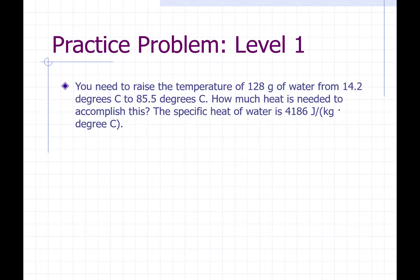Problem one: you need to raise the temperature of 128 grams of water from 14.2 degrees to 85.5 degrees C. How much heat is needed to accomplish this? The specific heat of water is 4186 joules per kilogram degree C. So here's our specific heat capacity C.